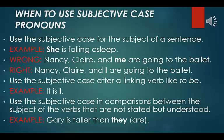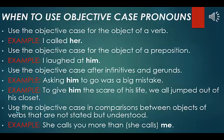When to use subjective case pronouns. Use the subjective case for the subject of a sentence. Example: she is falling asleep. Wrong: Nancy, Claire, and me are going to the ballet. Right: Nancy, Claire, and I are going to the ballet. Use the subjective case after a linking verb like 'to be.' Example: it is I. Use the subjective case in comparisons between subjects of verbs not stated but understood. Example: Gary is taller than they are. Use the objective case for the object of a verb. Example: I called her. Use the objective case for the object of a preposition. Example: I laughed at him.